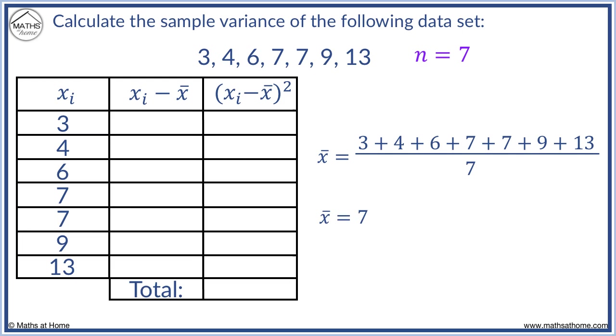We now subtract the mean from each data value. 3 minus 7 equals minus 4. 4 minus 7 equals minus 3. 6 minus 7 equals minus 1. 7 minus 7 equals 0. 7 minus 7 equals 0. 9 minus 7 equals 2. And 13 minus 7 equals 6.